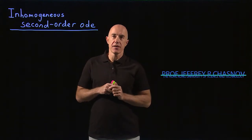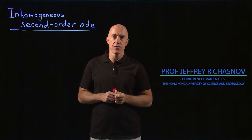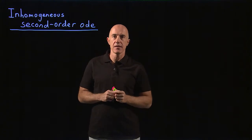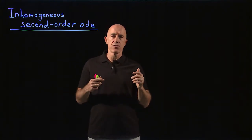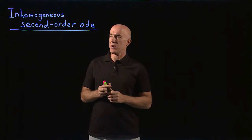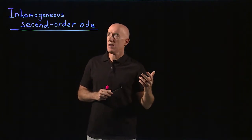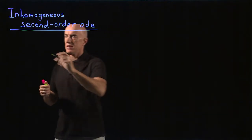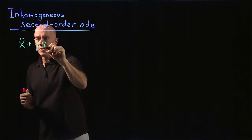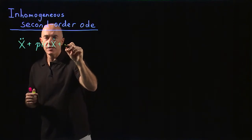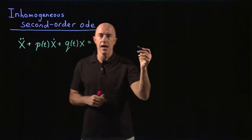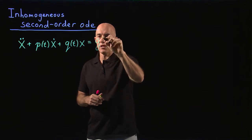So far we've been solving homogeneous linear second order differential equations. Homogeneous means that there's a zero on the right hand side. In this video I want to show you the theory behind solving second order inhomogeneous differential equations. So let's do the general second order linear equation. We have x double dot plus some function of t, p of t, times x dot, plus some function of t, q of t times x. And then here we have a non-zero right hand side, which I'll call g of t.